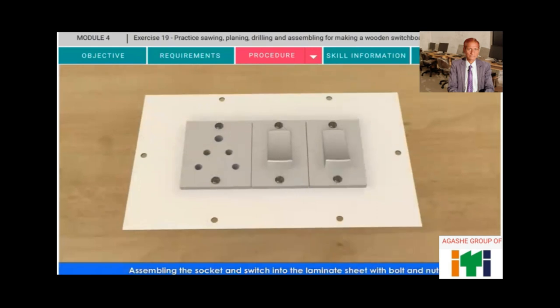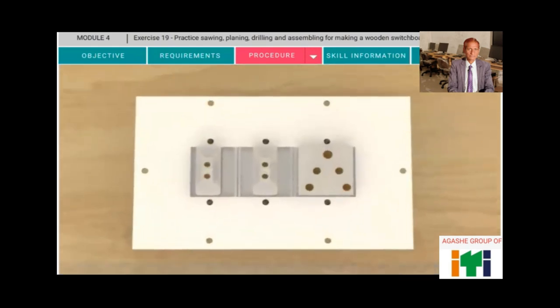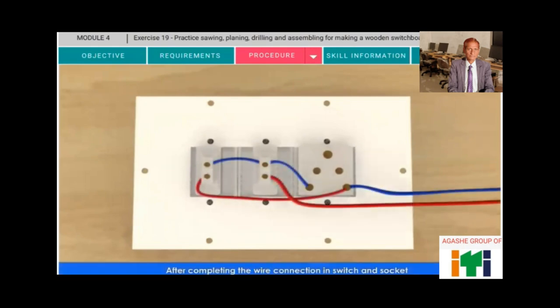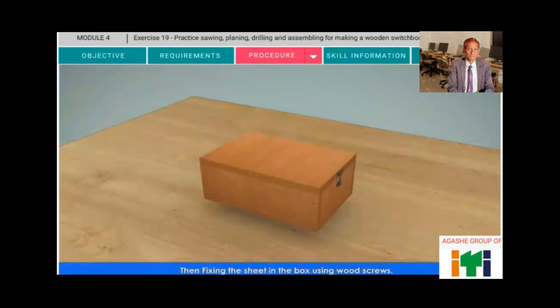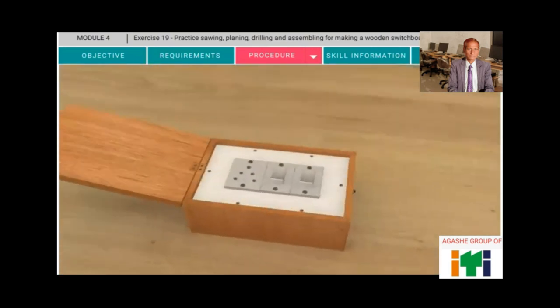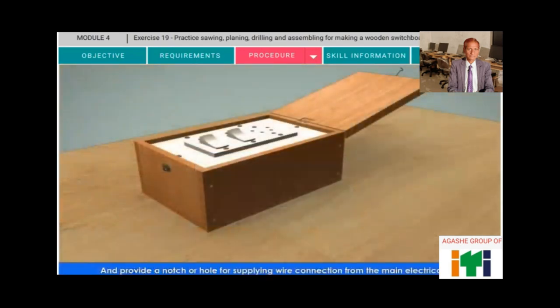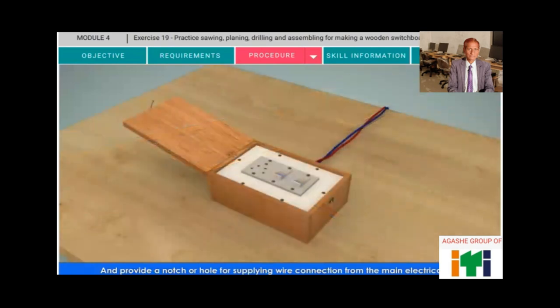Assembling the socket and switch into the laminate sheet with bolt and nuts after completing the wire connection in switch and socket. Then fixing the sheet in the box using wood screws and provide a notch or hole for supplying wire connection from the main electrical panel.